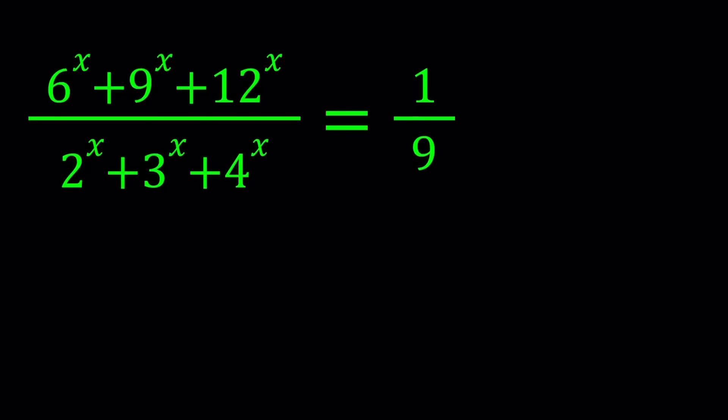Hello everyone. In this video we're going to be solving an exponential equation. We have 6 to the power x plus 9 to the power x plus 12 to the power x divided by 2 to the x plus 3 to the x plus 4 to the x equals 1 ninth. And we're going to be solving for x values.